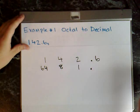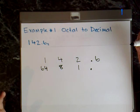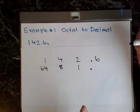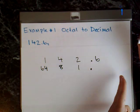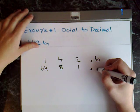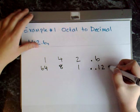And then to the right side of the decimal place you have to use negative values. So you start at 8 to the power of negative 1, and if you had more digits then you would keep going. So 8 to the power of negative 1 equals 0.125.